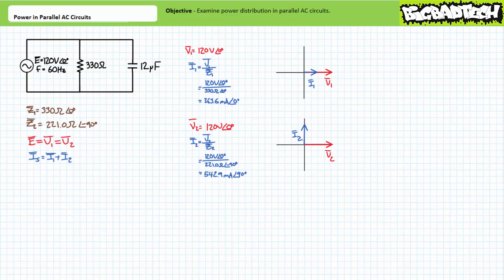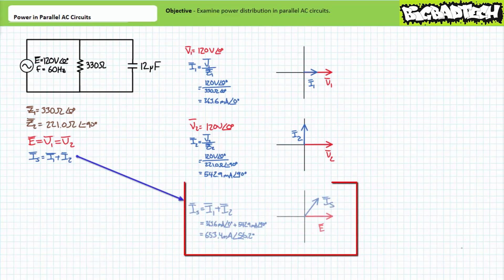Note the smaller impedance magnitude Z2 appears to be drawing more current than the larger impedance Z1. Given the nature of a parallel circuit is dominated by the element drawing the most current, one might expect this circuit to exhibit primarily capacitive characteristics. Additionally, given voltage across elements in parallel is the same, the larger current drawn by the capacitor might yield a larger apparent power figure for it, whereas the smaller current drawn by the resistor might yield a smaller apparent power figure. Application of Kirchhoff's current law demonstrates source current equals 653.4 milliamperes at an angle of 56.2 degrees. The phasor diagram indicates source current leads source voltage by 56.2 degrees, confirming the combined impedance has primarily capacitive nature as anticipated.